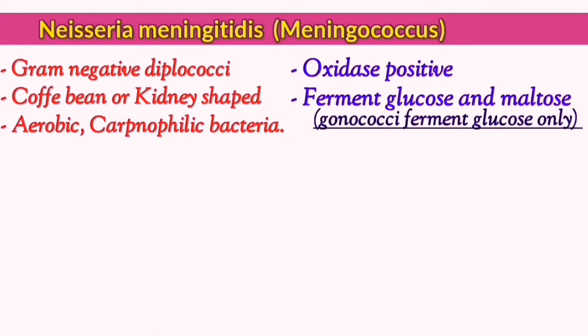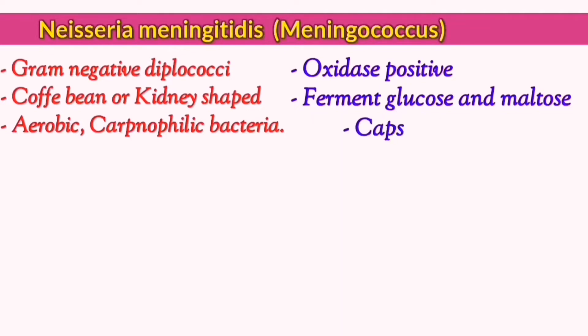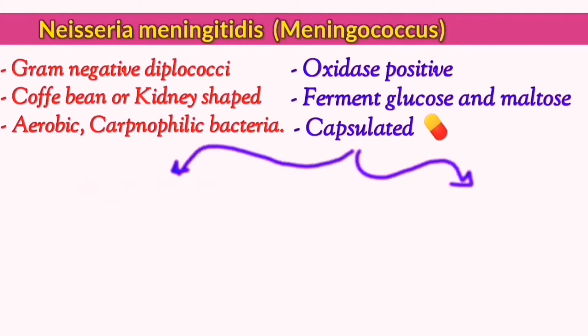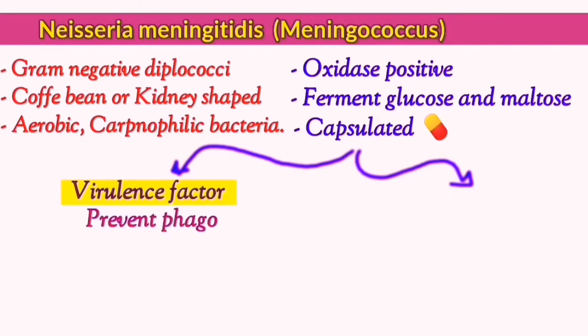The most distinctive feature that distinguishes meningococci from gonococci is that meningococci are capsulated due to the ability to form a protective capsule. This is considered a strong virulence factor that shields the bacteria from phagocytosis.